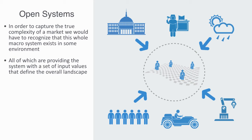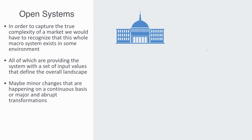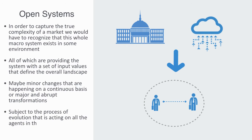All of these contextual factors are providing the system with a set of input values that define the overall landscape. When one of these input values changes — for example, when a new technology comes along or there is a change within the political regulatory environment — then the whole landscape will change. This can be minor changes happening on a continuous basis, or a major abrupt transformation, such as that experienced by the Russian economy with the fall of the communist regime, or the current major technological disruption brought about by the rise of the internet. During such a time of disruption, it is no longer so much the interactions between agents that define the topology, but these input values to the system, as agents become subject to a process of evolution as the whole environment changes.